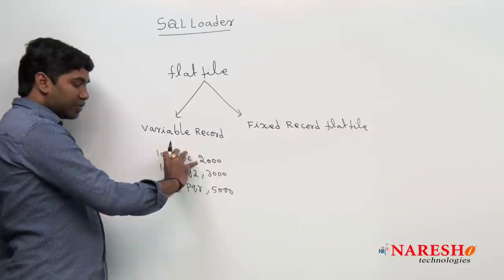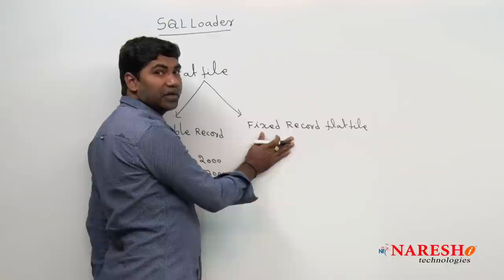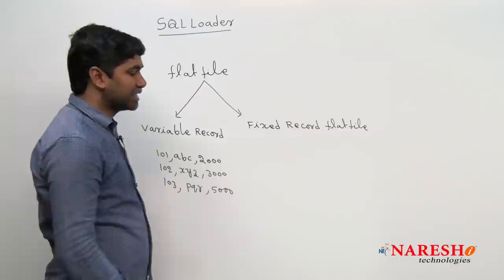When using a Variable Length Record Flat File as source, we create a separate control file. A Fixed Length Record Flat File means a flat file which does not have any delimiters — those types of flat files are called Fixed Length Record Flat Files.